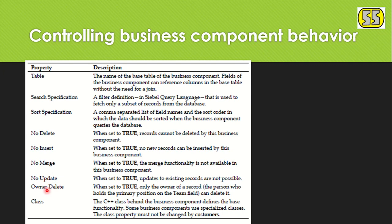Owner Delete means only the person who created a record can delete it. For example, in a sales context, if Agent A creates a customer record, Agent B cannot delete it to inflate their own targets. Setting Owner Delete ensures only the creator can delete that record.